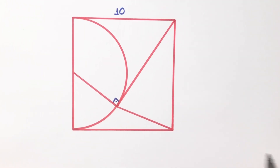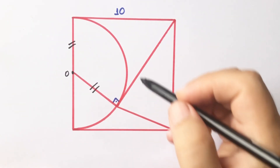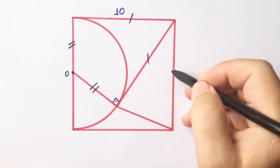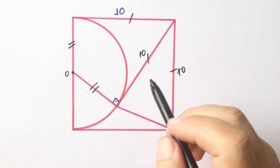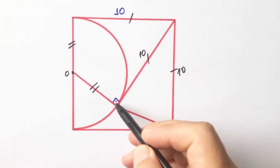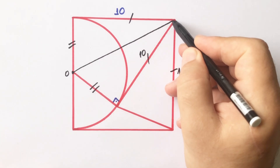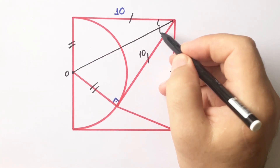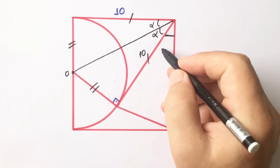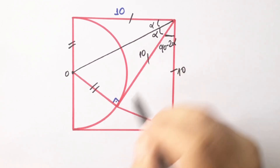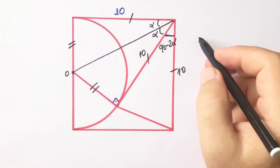That was the first method. Now we will calculate the area using a second method. You know that these are radii, and if this is 10, this length is also 10. If you notice, this shape is a kite. So if we connect these two corners, these two angles must be equal because of the kite property. This angle must be 90 minus 2 alpha. Let's calculate the triangle's area using the sine formula.